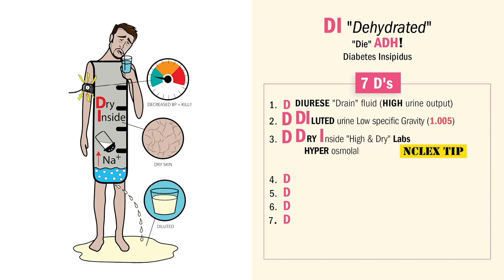NCLEX keywords — write these down: hyper or high blood serum osmolality, and hypernatremia, that high sodium over 145. Big NCLEX number right there. They're going to try and trick you. DI — dry inside — high and dry labs. Very thick, pasty blood with increased sodium and increased blood serum osmolality, basically meaning you're going to have really thick blood.